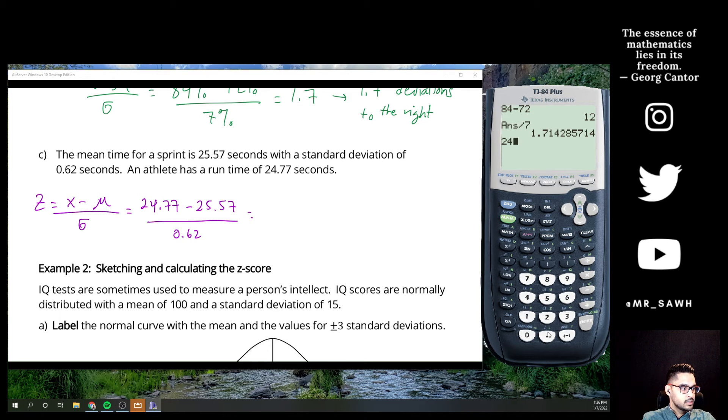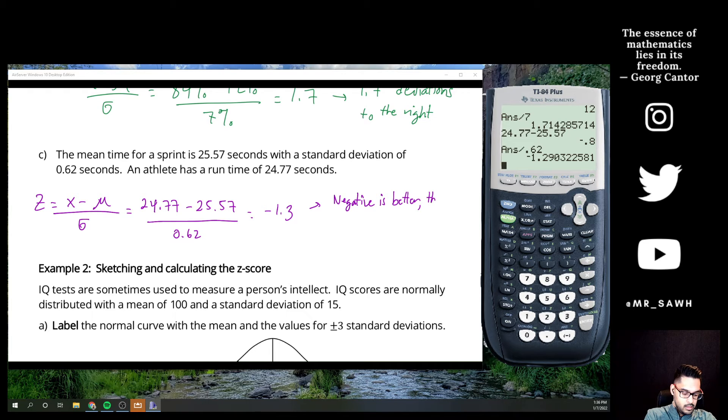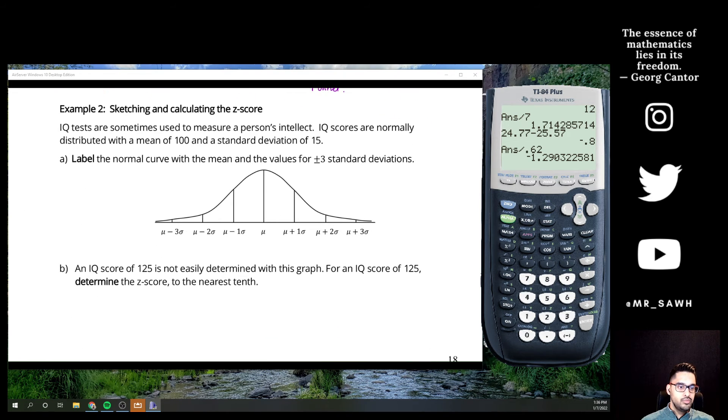Standard deviation of 0.62. So if we subtract, 5, 5, 7, divided by 0.62. There we go. Negative 1.3. Okay, so negative here is better. This signifies a faster runner. In a race, you want to be first, so faster is better.